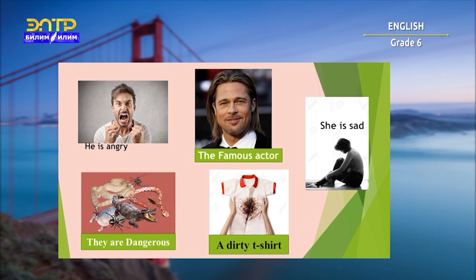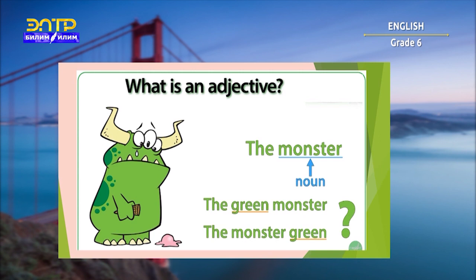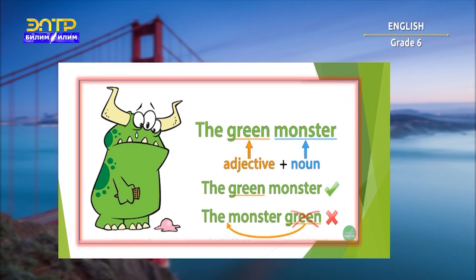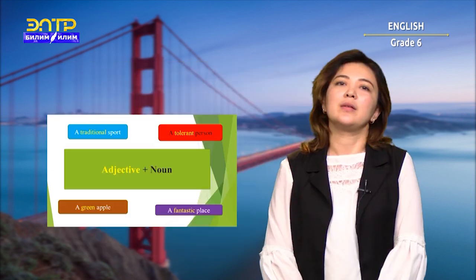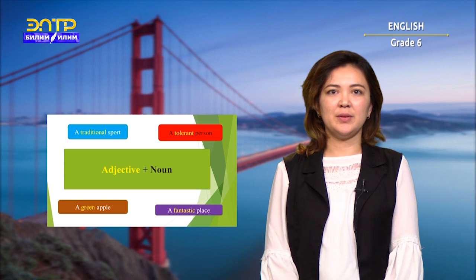The three sentences describe the pictures with the verb to be, and two sentences are just a description of a noun. What is the position of the adjective? Where do we put the adjective? Do we say 'the green monster' or 'the monster green'? The correct order is 'the green monster.' The order is adjective plus noun. Green is an adjective, monster is a noun. Green is a description of the monster. The adjective is before the noun. Remember, please, the structure: adjective plus noun.